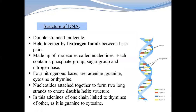Structure of DNA: DNA is a double-stranded molecule held together by hydrogen bonds. It is two polynucleotide chains which are twisted together. The upper portion is a phosphate and sugar group. The other portion is made from nitrogen bases. If you look at the diagram, the vertical portion is made from phosphate and sugar, and the horizontal portion is made from nitrogen bases.